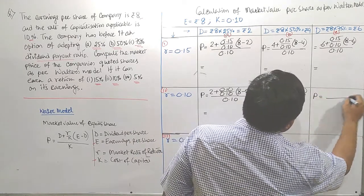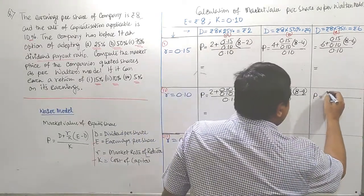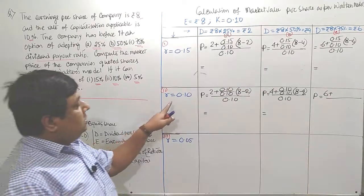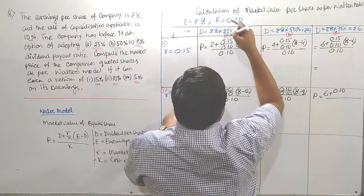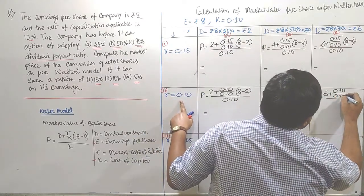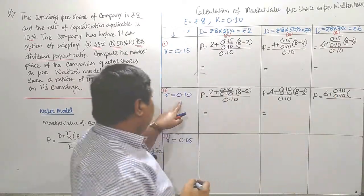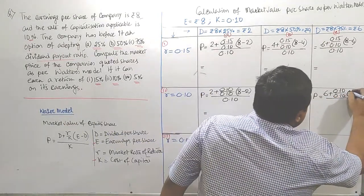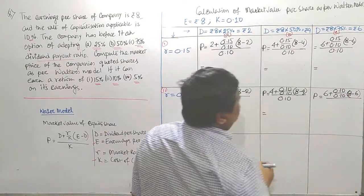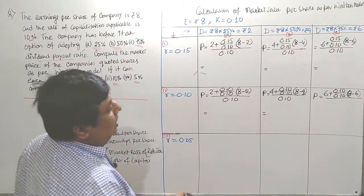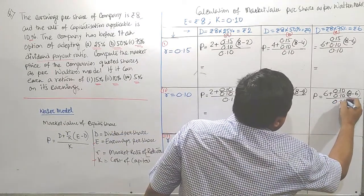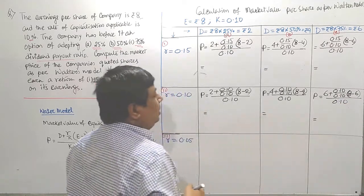Third column and second row, it is 6 plus R is 0.10, K is also rigid, 0.10 within bracket. E is 8 rupees and D is 6 in such case, all divided by K, 0.10.